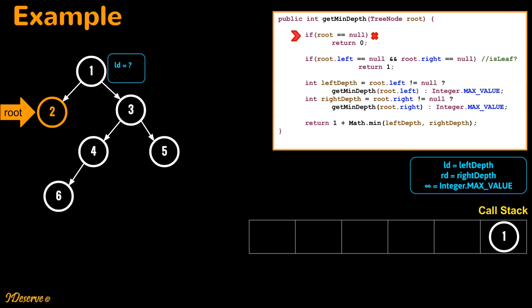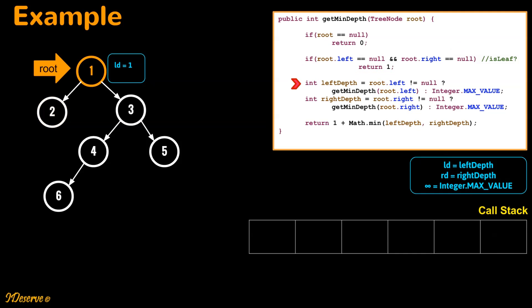Now root is pointing to node 2. We check if root is null — it is not. We check if root is a leaf — yes, it is a leaf node, so we return 1, as the depth of a leaf node is 1. We go back to the previous call stack where root was pointing to node 1. We have calculated left depth, and now we check if the right subtree of root is null — it is not, so we recursively call get min depth for the right child.